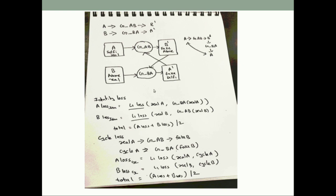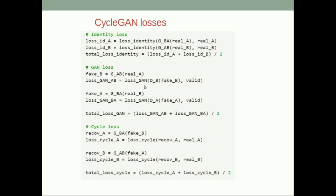There are three different loss functions used in the CycleGAN paper: identity loss, cycle loss, and GAN loss. For cycle loss: real A goes to the first generator to produce fake B (fake anime), which goes to the second generator to produce cycle A. Ideally real A and cycle A should be the same; if not, we compute L1 loss. The same applies symmetrically for B. The PyTorch code for these losses includes identity loss, GAN loss, and cycle loss, which we'll see as we code.